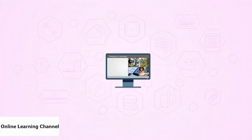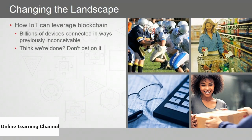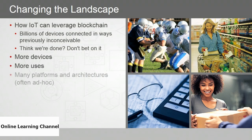There are billions of devices connected in ways we couldn't conceive of 20 years ago, and we're constantly seeing more devices, more uses, and multiple platforms and architectures that are often ad hoc. 20 years ago, no one thought they needed their fridge or car connected to the Internet — that didn't fit the paradigm. But things have changed significantly, and we have to consider the possible problems that may arise from so much connectivity.